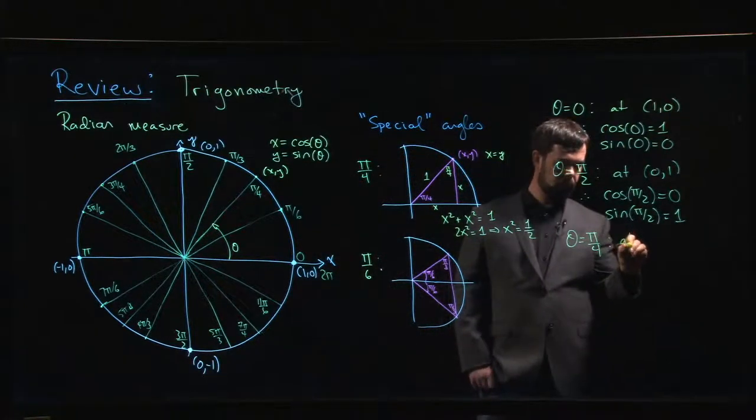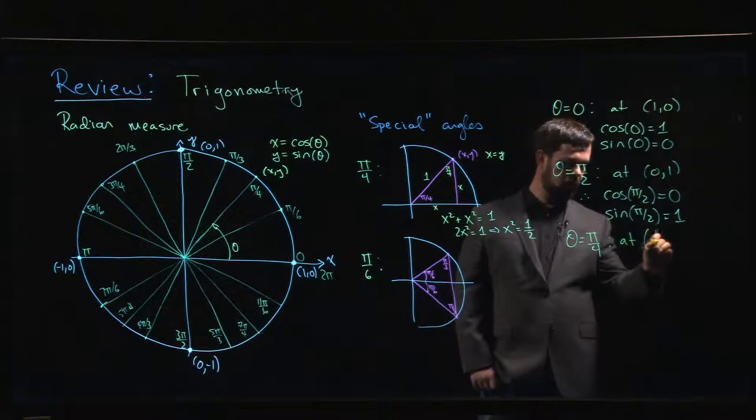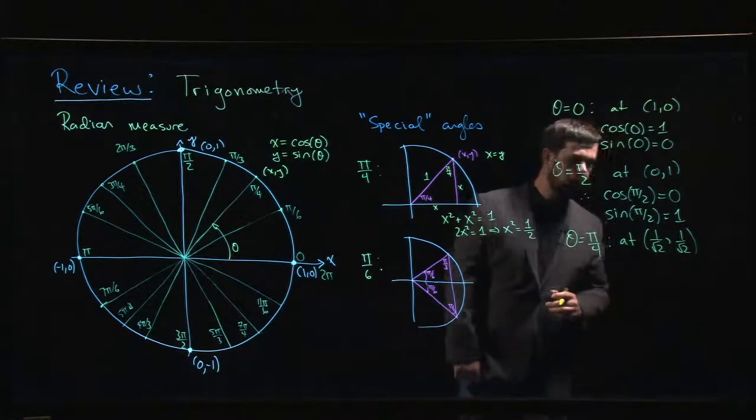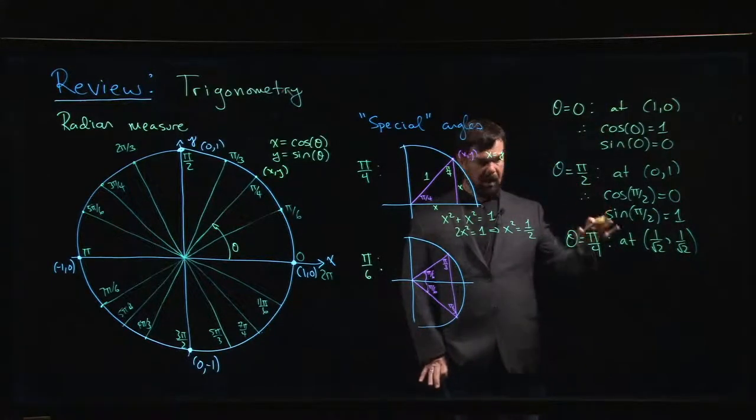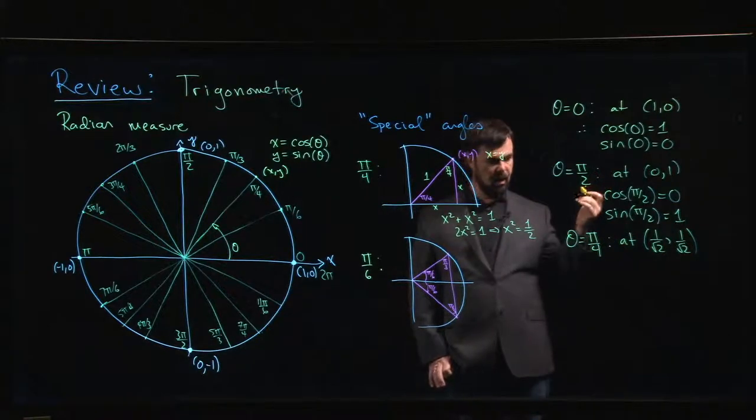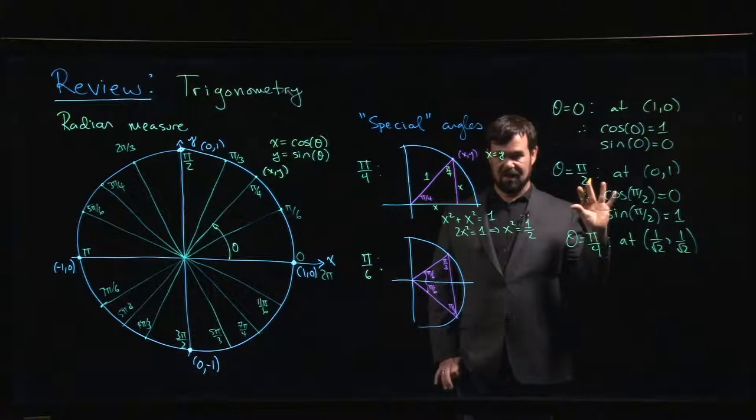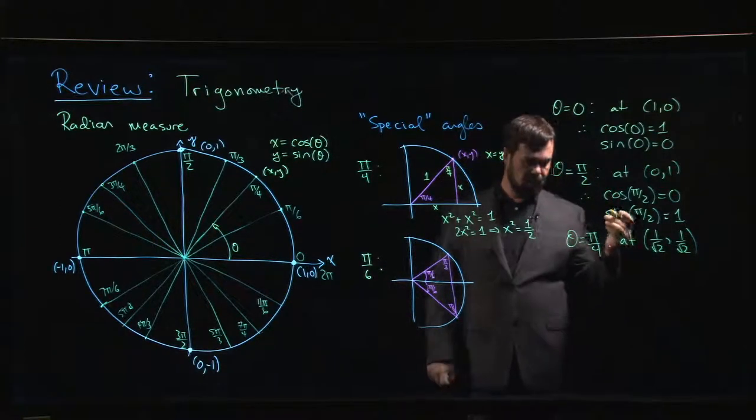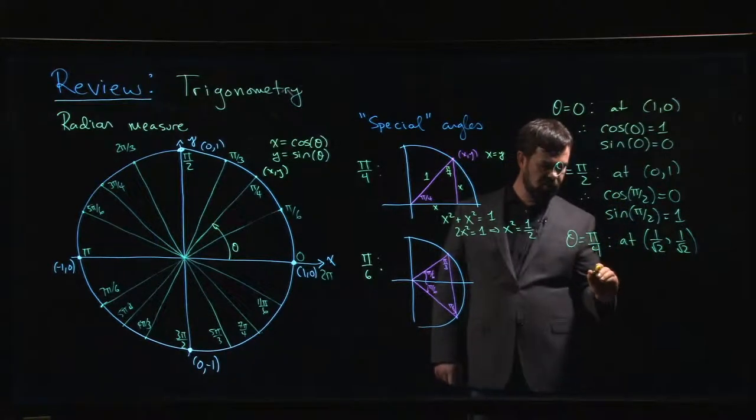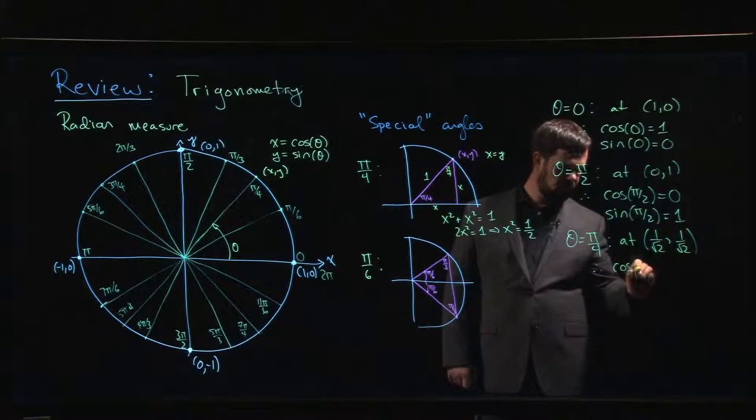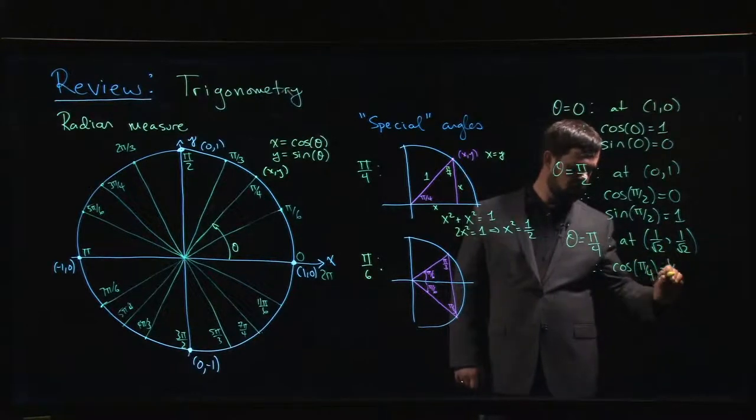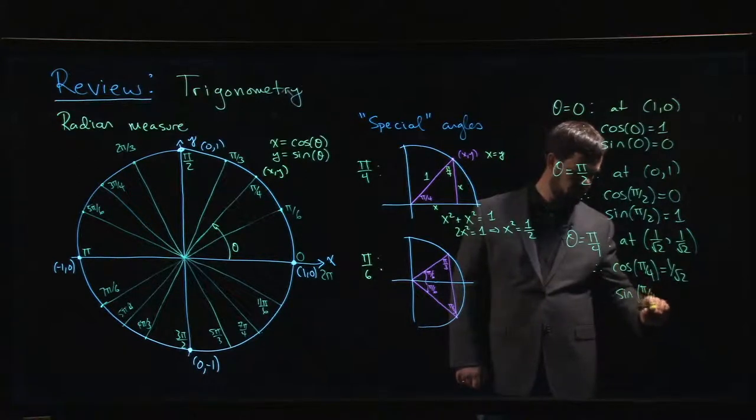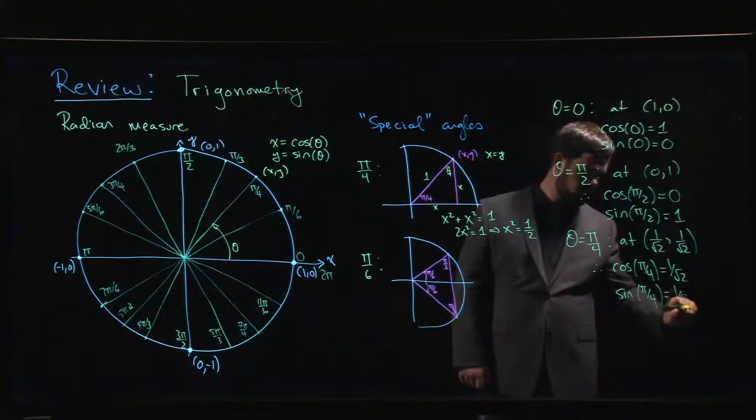And that puts me at the point 1 over root 2, 1 over root 2. If you feel compelled to rationalize the denominator here, go right ahead. You could also write this as root 2 over 2. It really doesn't matter. Nobody in university is going to care if you rationalize your denominators. So I wouldn't worry that much about it. Cos pi over 4 is 1 over root 2. Sine of pi over 4 is 1 over root 2.